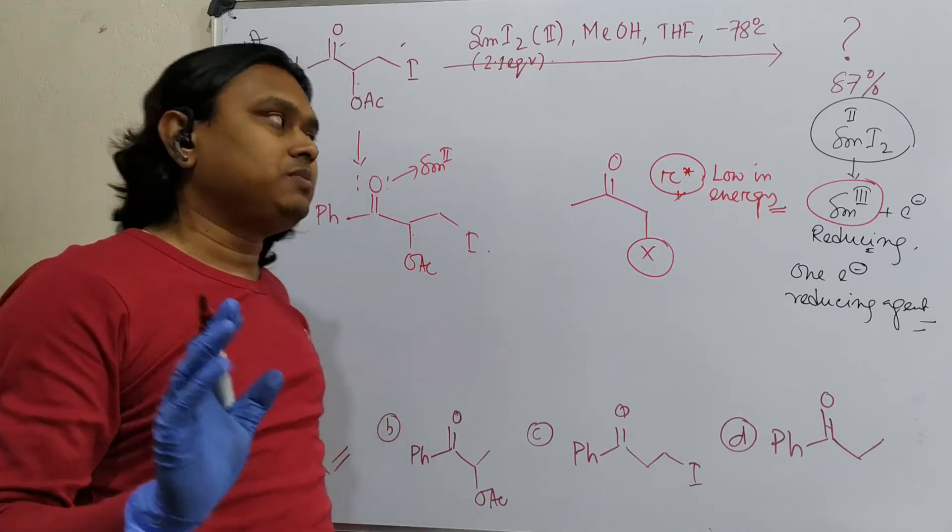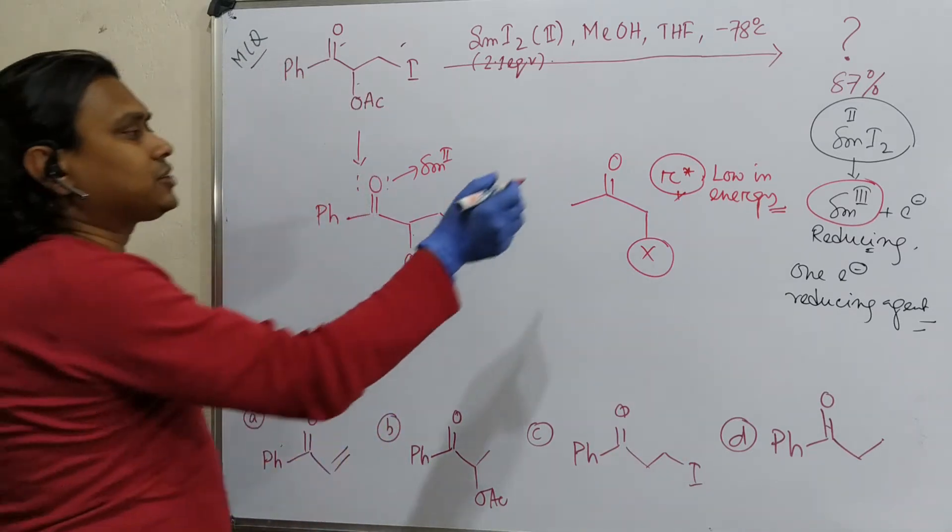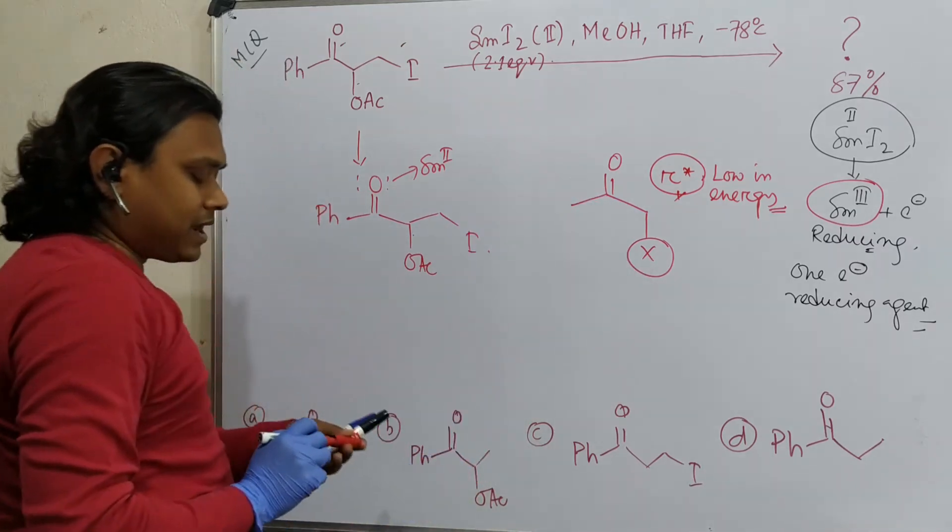This is a very easy way to remember this one. So it gives electron to pi star. And remember another part,